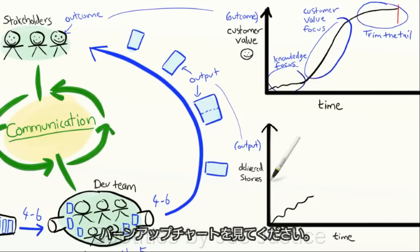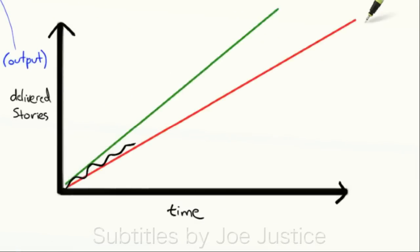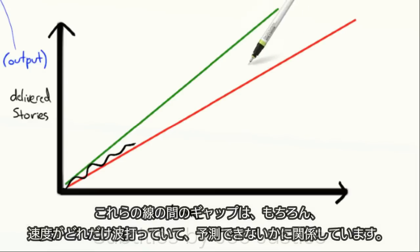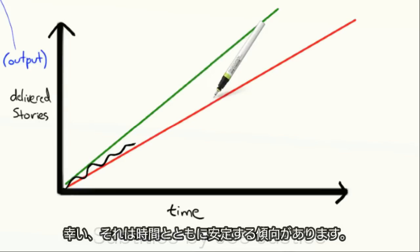Now look at the burn-up chart, and you can draw an optimistic and pessimistic trend line. You can do it using fancy statistics voodoo, or you can just draw it visually. And the gap between these lines is of course related to how wavy and unpredictable your velocity is. Luckily, that tends to stabilize over time. So our cone of uncertainty should get tighter and tighter.